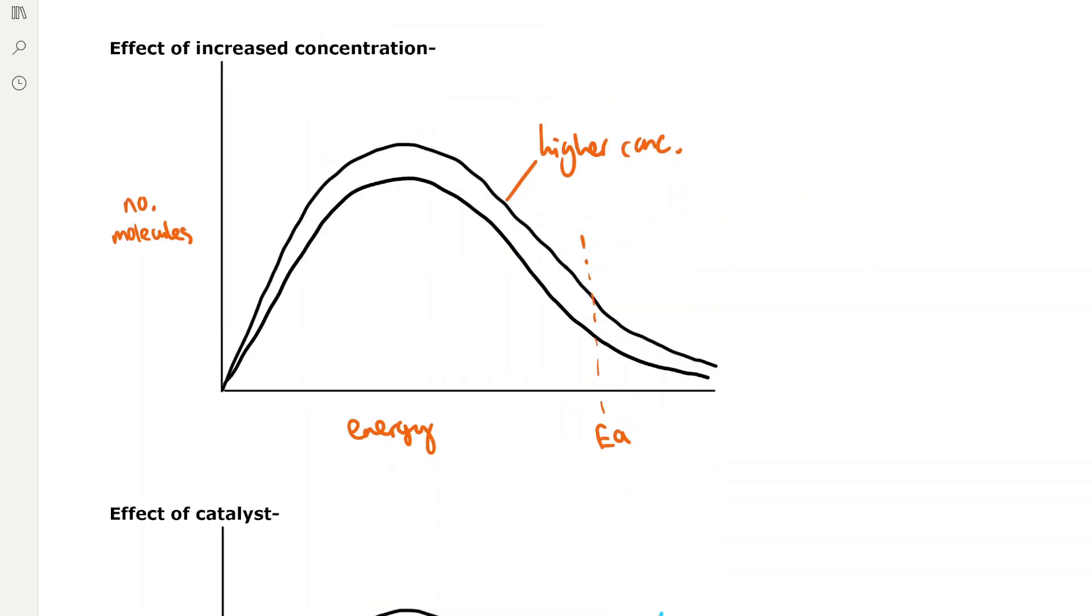For an increased concentration, we have the same gradient, but we simply have a higher line, which means that more molecules have higher than the activation energy, so it can react upon collision in the correct orientation.